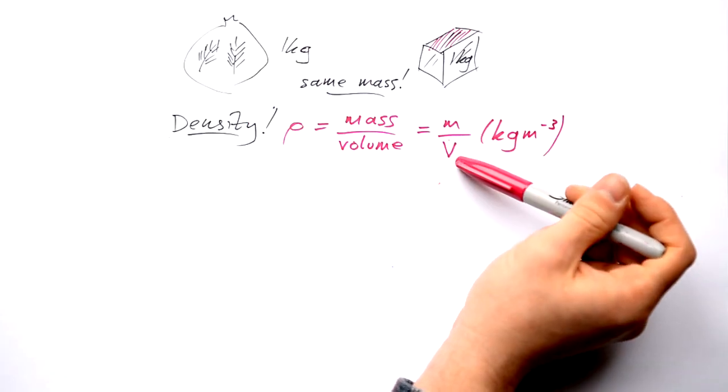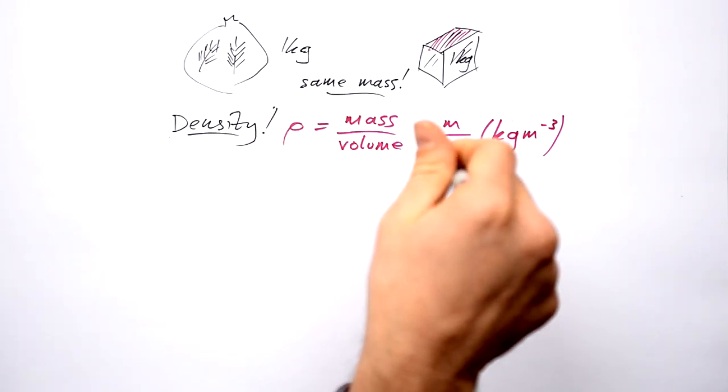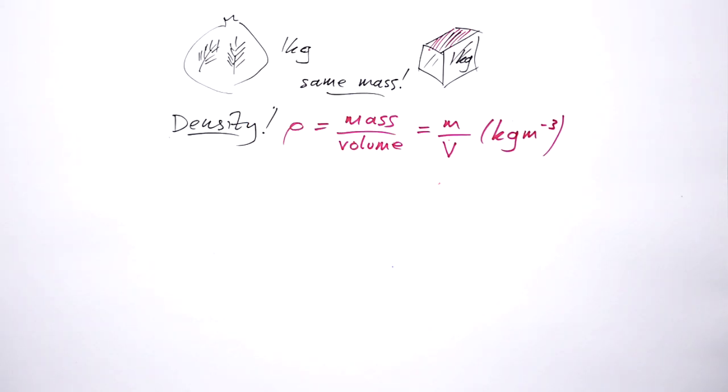So you know the mass of something and you know its volume you can find out its density. Or if you know something's density and you know its volume then you can figure out its mass.